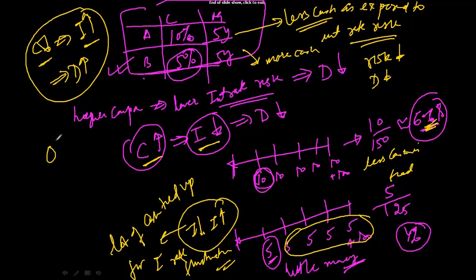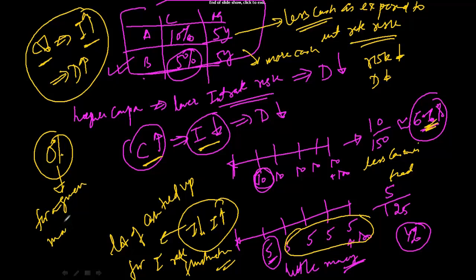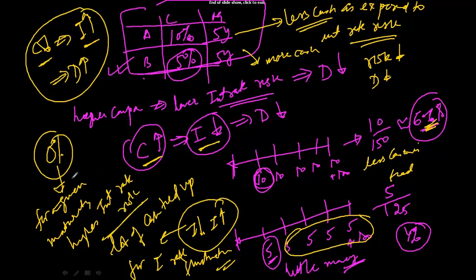So if you consider a zero coupon bond, for a given maturity a zero coupon bond will have the highest interest rate risk. Because the coupon cannot be less than zero, so for a given maturity a zero coupon bond will have the highest interest rate risk.